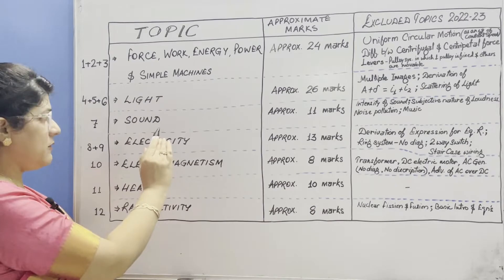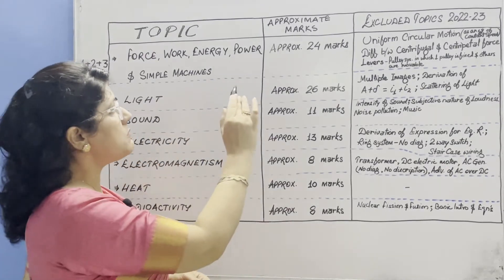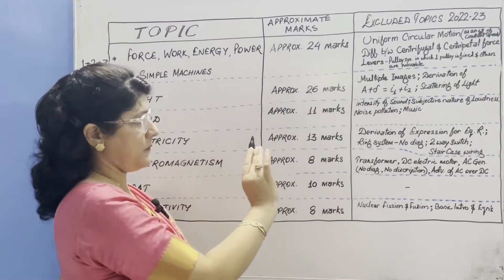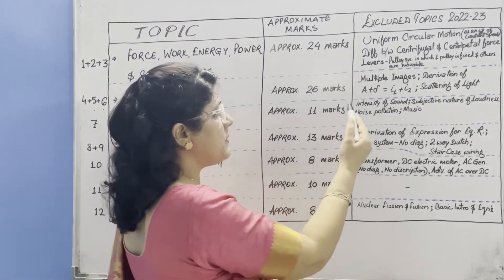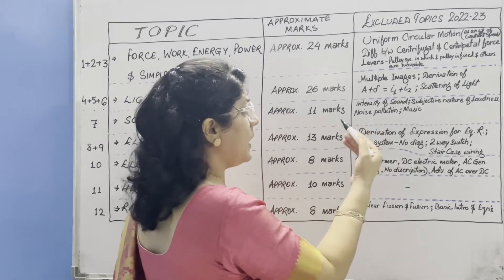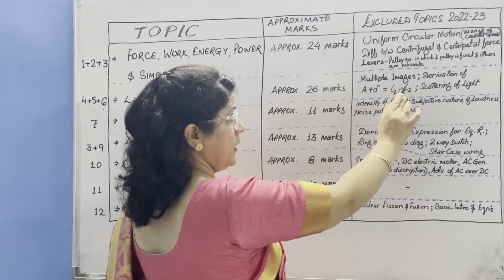The second unit is light which consists of chapters 4, 5 and 6. Approximate marks are 26 and excluded topics from this unit are multiple images in a mirror glass plate etc. - diagram is not there only.